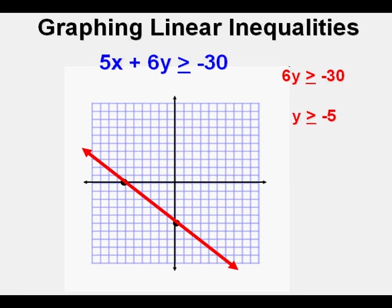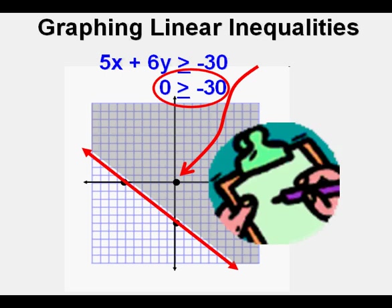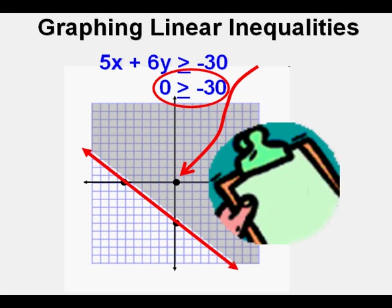Since it's greater than, we shade upward. We mark the point (0, 0) — the easiest to use. Since both x and y are 0, that gives us 0 is greater than or equal to negative 30. Is that correct? Yes, it is correct. And because (0, 0) is in the shaded area and part of the solution set, we have shaded the right way. Check.